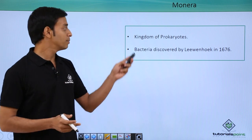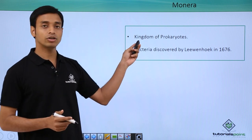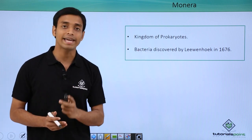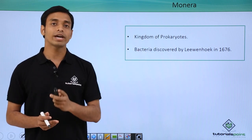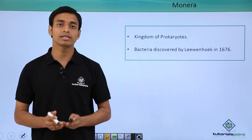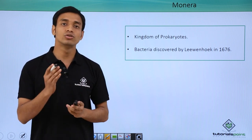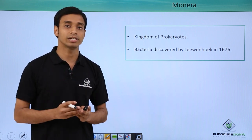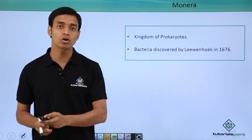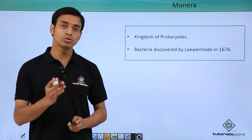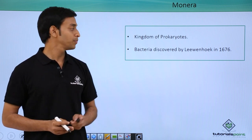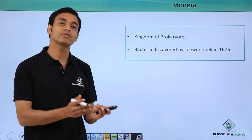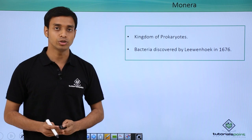Kingdom Monera mostly consists of prokaryotes. Prokaryotes are organisms which do not have a prominent nucleus — that is, they do not have a true nucleus, unlike eukaryotes which have got a true nucleus.